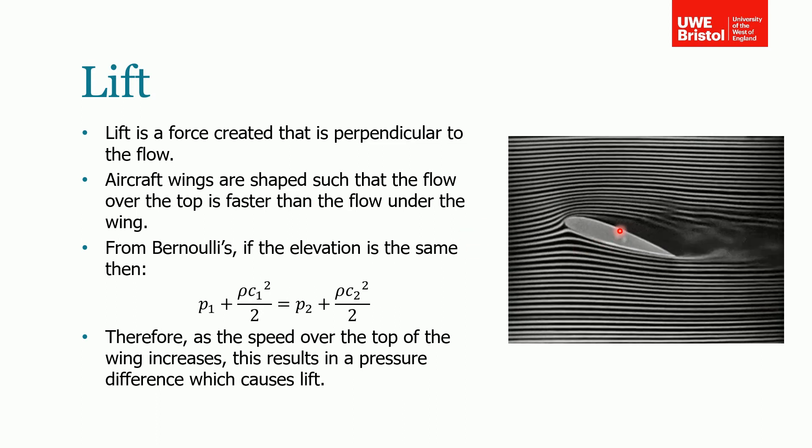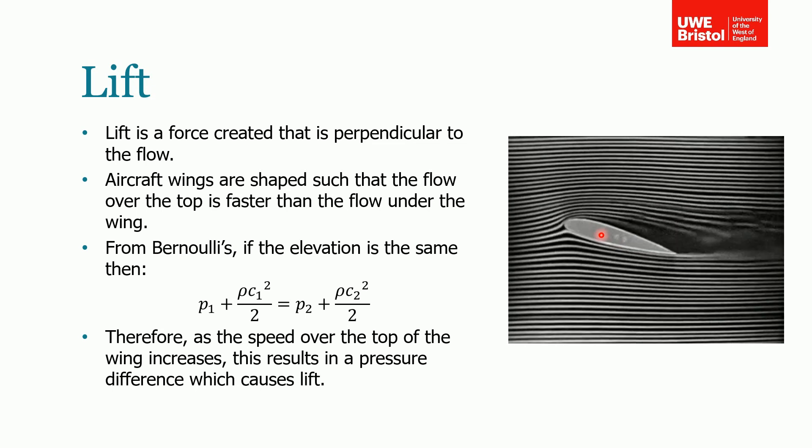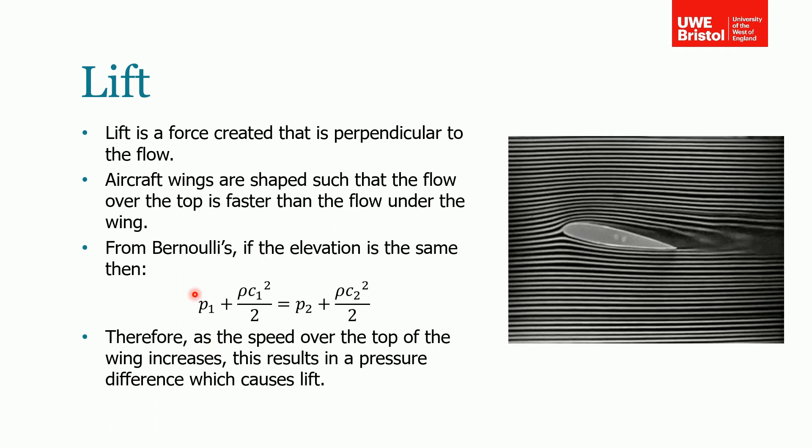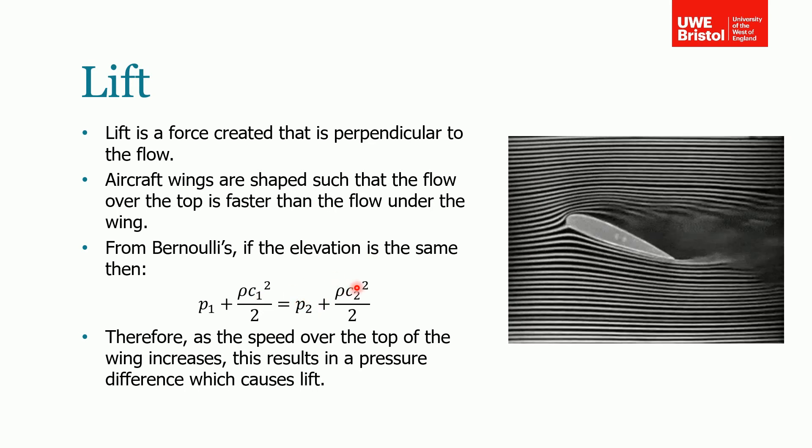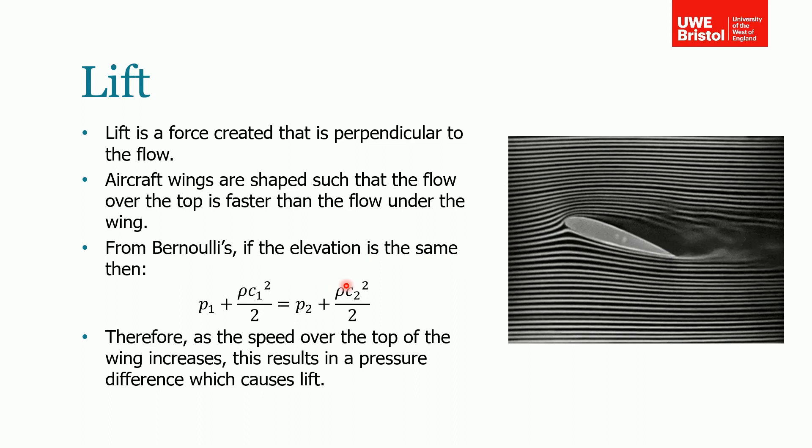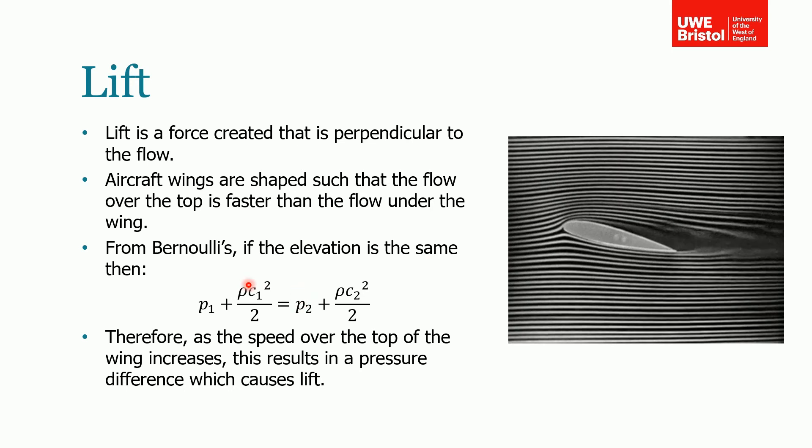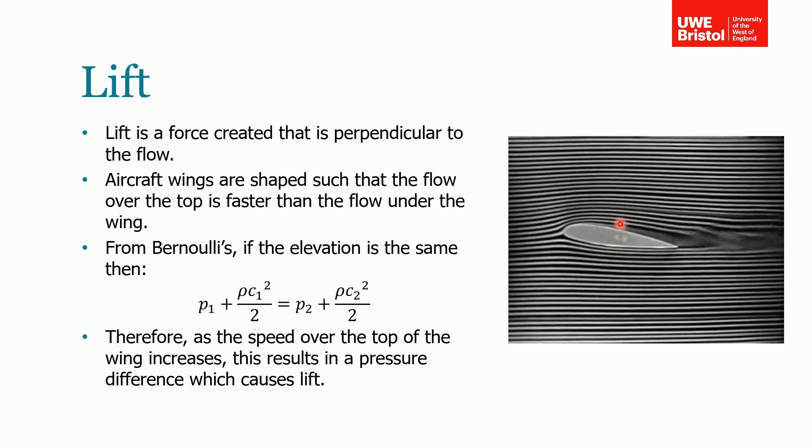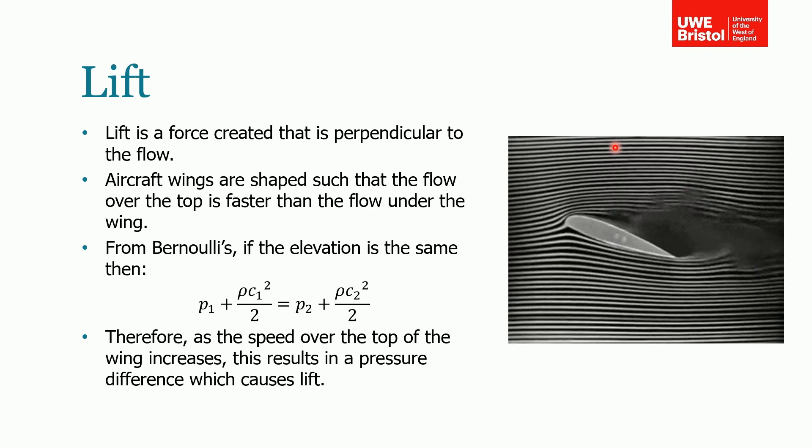And that creates lift. The way it does that is, if we consider Bernoulli's, if we say that the change in elevation between the top and the bottom is negligible, so we can cancel those two terms from Bernoulli's and we can write Bernoulli's like this. So our static pressure plus our dynamic pressure is equal to static pressure at two and dynamic pressure at two. So if the pressure at point two at the top of the wing is moving faster, and it's moving slower on the bottom wing, then it means that P2 must be lower than P1, and therefore we've got a pressure differential across the wing. The static pressure at the top is lower than the static pressure at the bottom, so that creates a net force lifting it up, and that's what creates the lift.